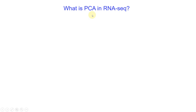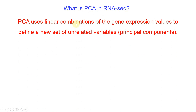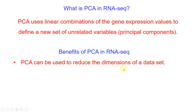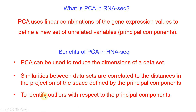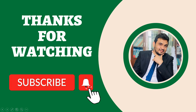So what have we understood so far about PCA in RNA-seq? PCA uses the linear combination of gene expression values to define a new set of unrelated variables. The benefits of PCA in RNA-seq include: it can help reduce the dimension of the data set; it can show similarities between data sets that are correlated to distances in the projection space defined by their principal components; and it can help identify outliers with respect to the principal components. Hopefully now you understand why we use PCA and what its benefits are in RNA-seq. If you have any questions, please let me know in the comment section.